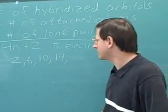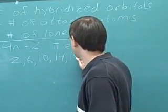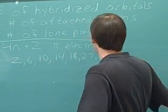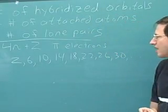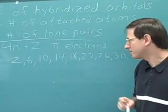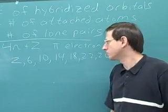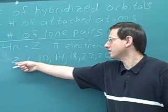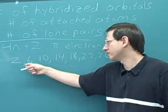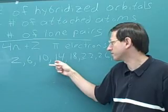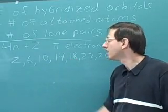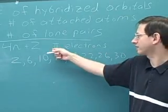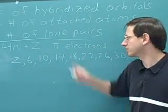You can see the pattern — we just keep adding 4. My opinion is it's actually easier to think of Hückel's rule in terms of a list. You start with the number 2 and just keep adding 4: 2, 6, 10, 14, 18, 22, 26, 30, and so on. That gives you the list of how many pi electrons you can have to satisfy Hückel's rule and be aromatic.